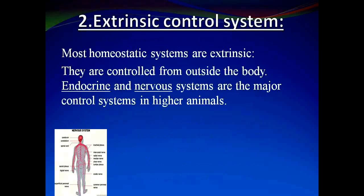In another system, the extrinsic control system, most homeostatic systems are extrinsic control systems. They are controlled from outside the body. The endocrine and nervous systems are the major control systems in higher animals.